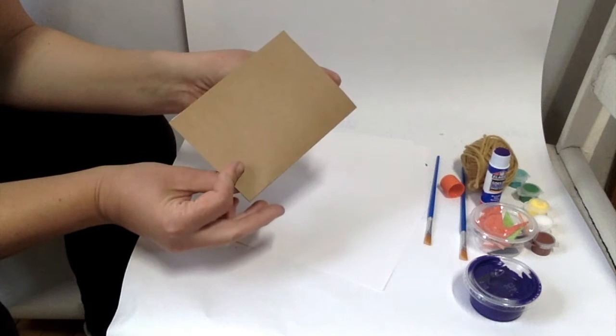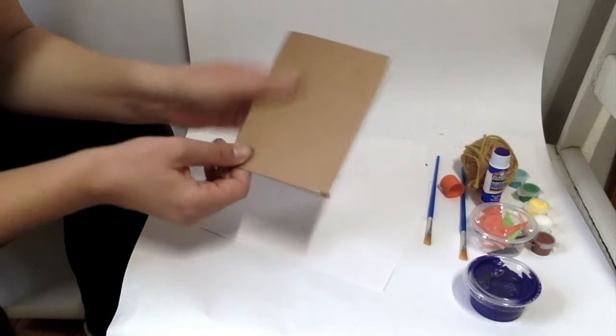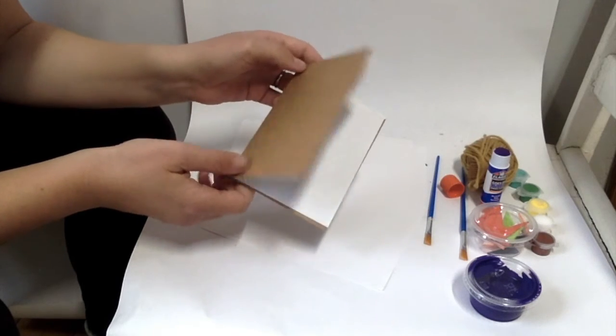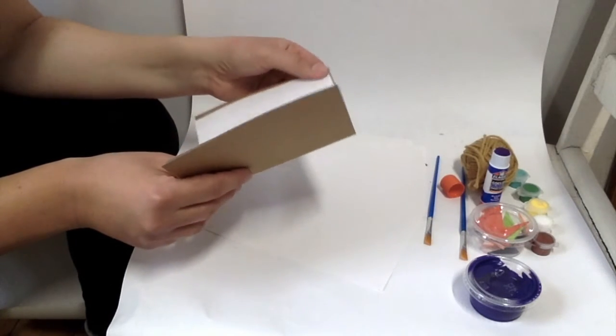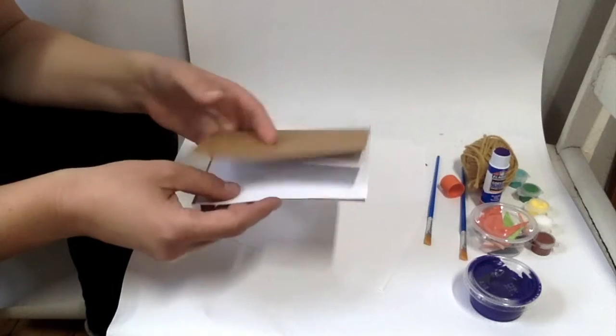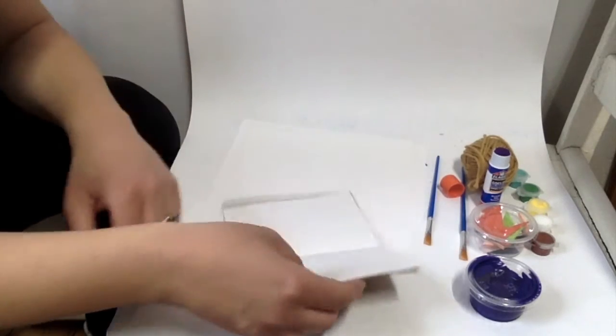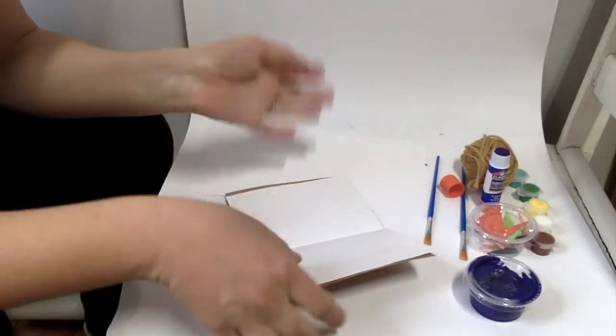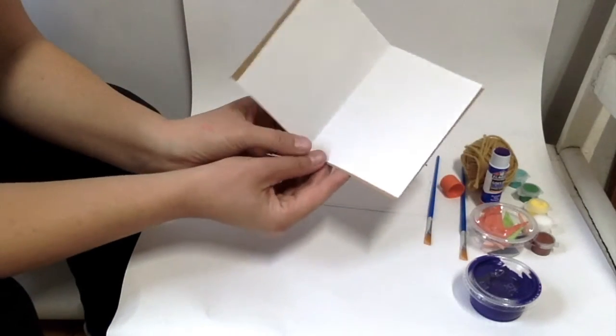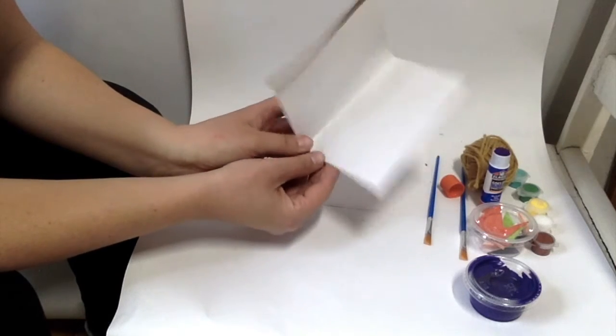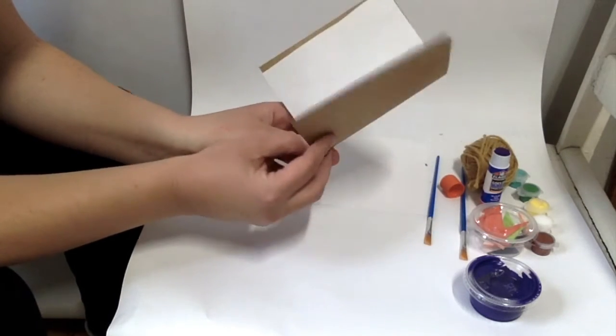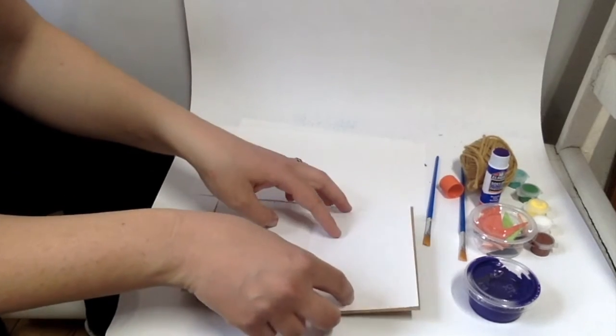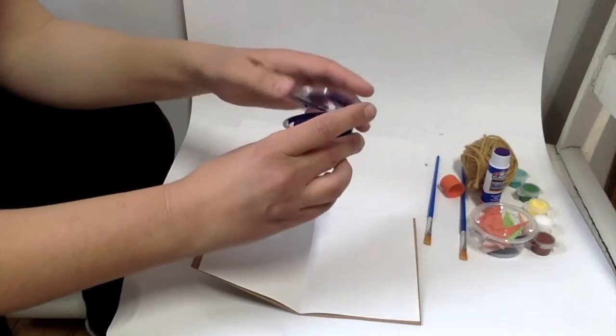One thing that I think of when I think of spring is butterflies, of course. There's something about a little butterfly coming out of its cocoon, flying around that makes me think of spring and just makes me really happy. What's cool about butterflies is the wings, of course. And doesn't our card kind of already look like a little bit of a butterfly? I'm going to show you a couple ways that you can make some wings on the inside.